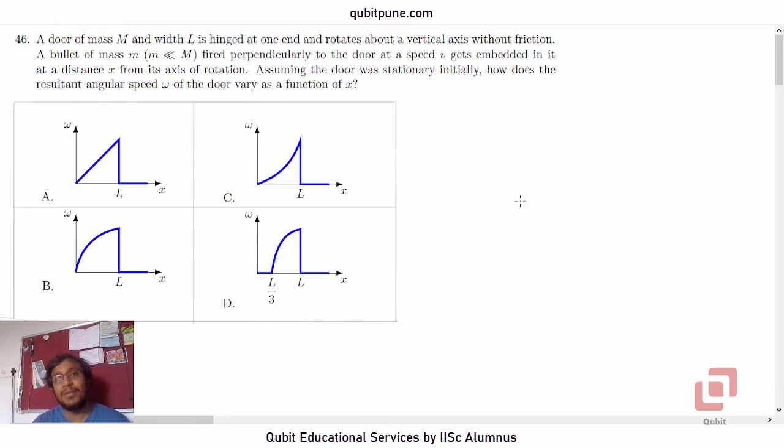This is our first video in the series where we will be solving the 46th question from the test. A door of mass M and width L is hinged at one end and rotates about a vertical axis without friction. A bullet of mass m, which is much smaller than the mass of the door, is fired perpendicularly to the door at speed v, gets embedded in it at a distance x from its axis of rotation. Assuming the door was stationary initially, how does the resultant angular speed omega of the door vary as a function of x? We have four options A, B, C, D.